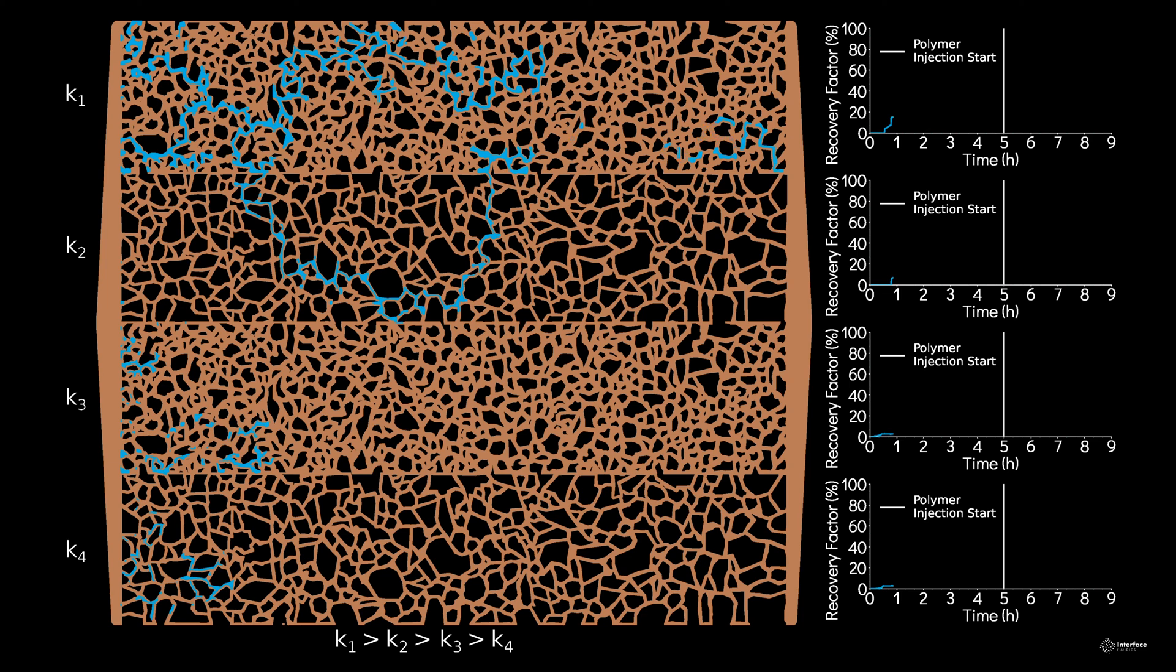Once this fluid connection breaks through to the producer, you'll see that the low resistance path quickly mobilizes the oil bank to reveal the thief zone that spans K1, K2, and parts of K3.